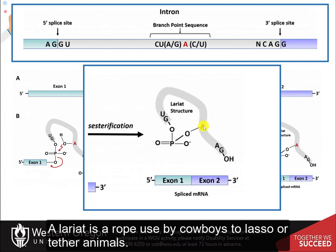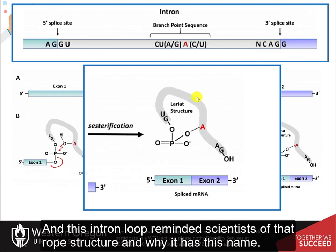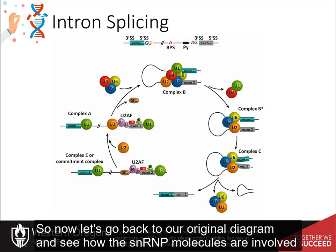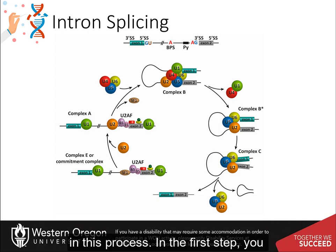This resulting looped structure is known as the lariat structure. A lariat is a rope used by cowboys to lasso or tether animals, and this intron loop reminded scientists of that rope structure, which is why it has this name. Now let's go back to our original diagram and see how the small nuclear RNP molecules are involved in this process.